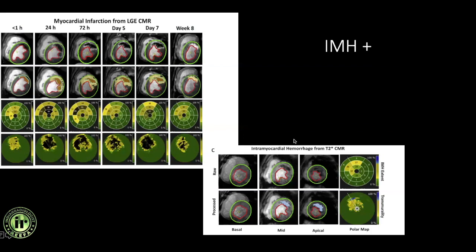Patients who developed intramyocardial hemorrhagic MI can be seen on short axis images showing an area of delayed hyper-enhancement. Within those bright areas, there are dark regions representing microvascular obstruction. If T2-star values within the MVO are less than 20 milliseconds, this quantifies intramyocardial hemorrhage. These patients were serially studied at less than one hour, 24 hours, two days, five days, seven days, and eight days — tracking infarct size, amount of IMH, LV function, and myocardial salvage parameters.